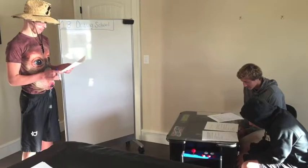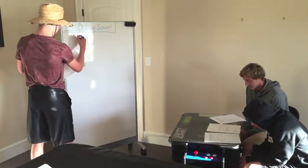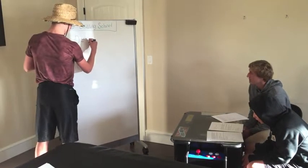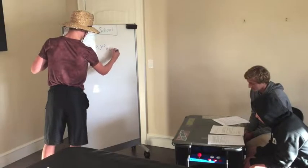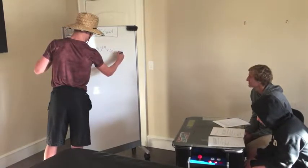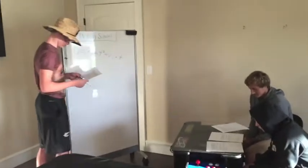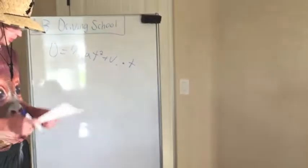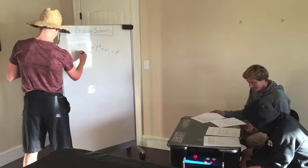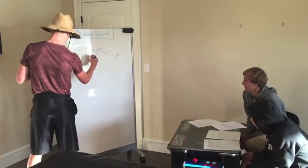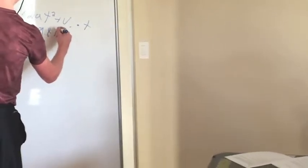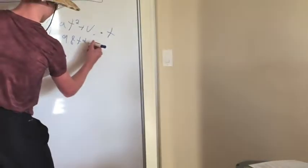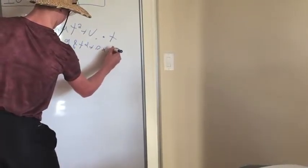We need to use the distance equals half acceleration times time squared plus velocity initial times time. Correct. Let's plug them in. 50 equals one half, 9.8 times time squared plus 0 times time.